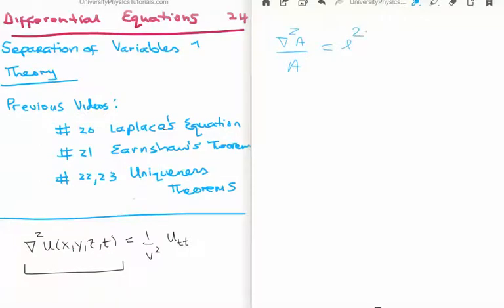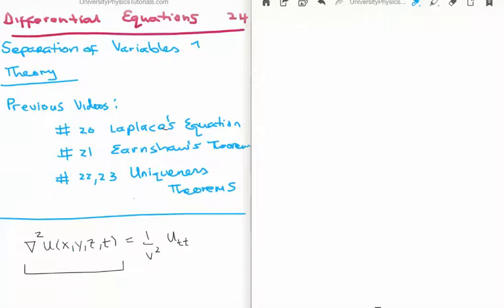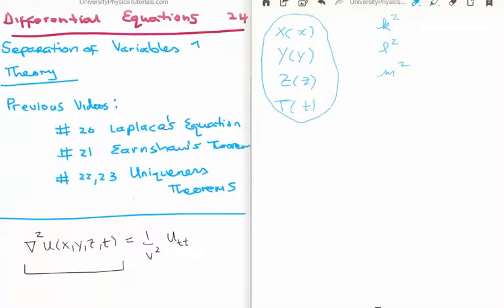Since A is a function of x and y, I make the substitution that A equals X a function of small x times Y a function of small y. Plugging both back in, we get another separation constant — let's call it m squared. In the end, what you get is a solution for X as a function of small x, Y as a function of small y, Z as a function of small z, and T as a function of small t. The relationship between each of these is governed by the separation constants k squared, L squared, and m squared. We then multiply the four solutions together to get the total solution for u — and that will be the solution for our differential equation.